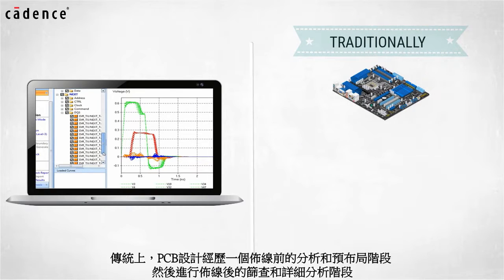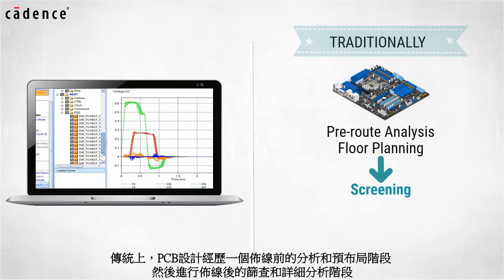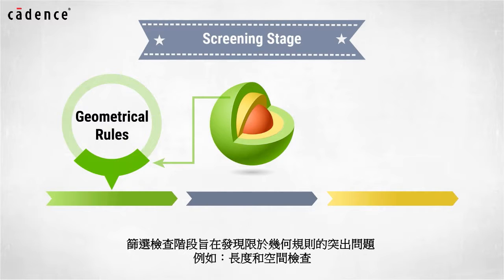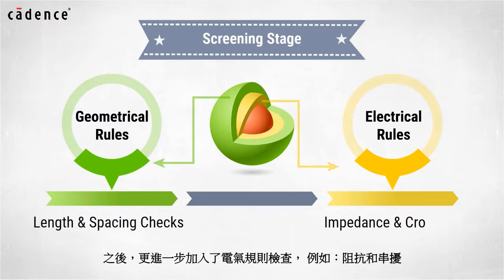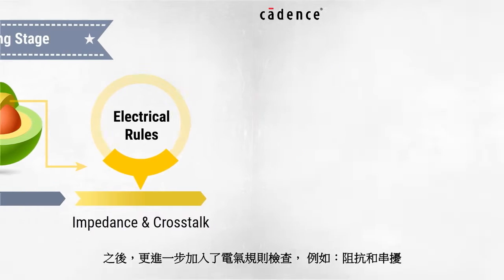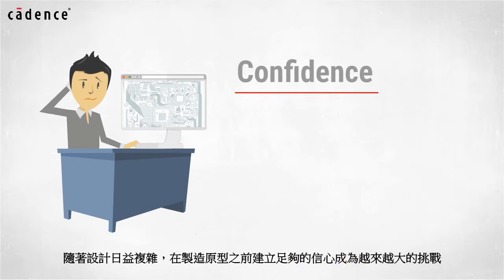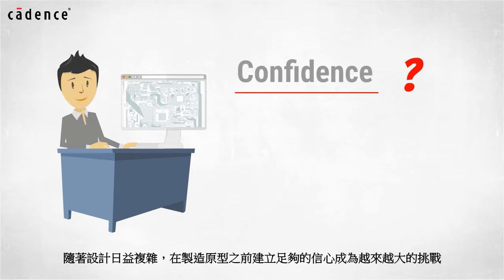Traditionally, printed circuit boards go through a pre-route analysis and floor planning stage before the design is routed, and then both a screening and a post-route detailed analysis. The screening stage is meant to catch glaring problems that used to be limited to geometrical rules such as length and spacing checks. Eventually, electrical rules such as impedance and crosstalk were added to this screening portion of the PCB design flow. With today's complex designs, establishing confidence before building a prototype is becoming a greater challenge.